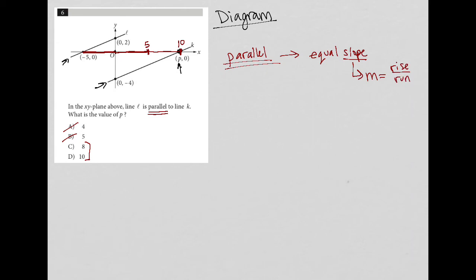Because I know, let's get rid of all of this that I wrote in here. I know that the slope of line L, I'd rise 2, and I'd run 5 in order to get from (-5, 0) to (0, 2). So I know that my slope, M, is 2/5.